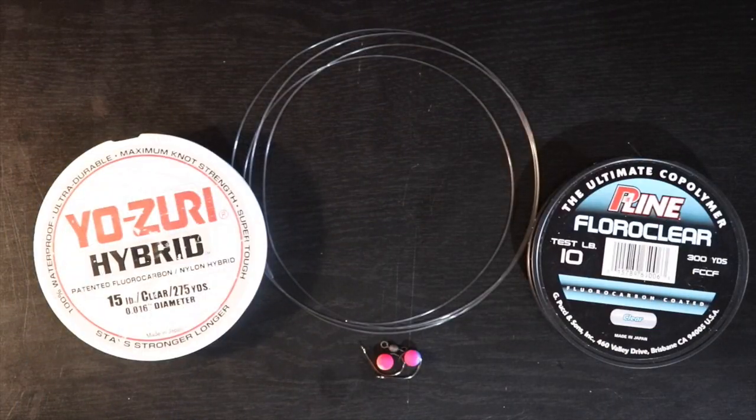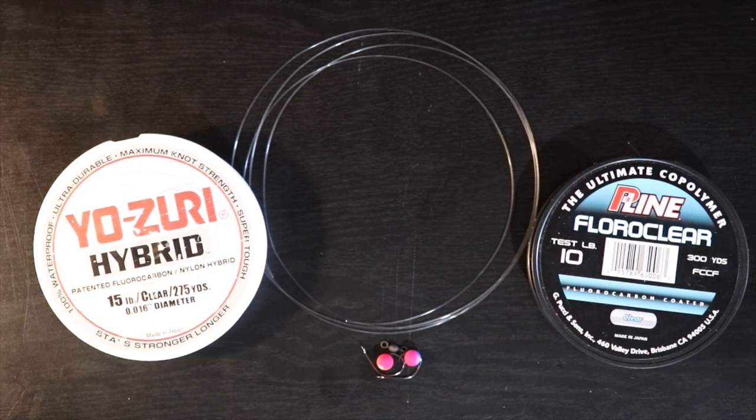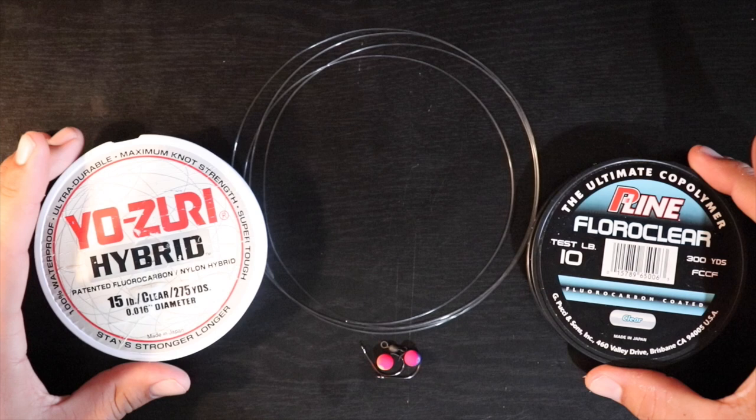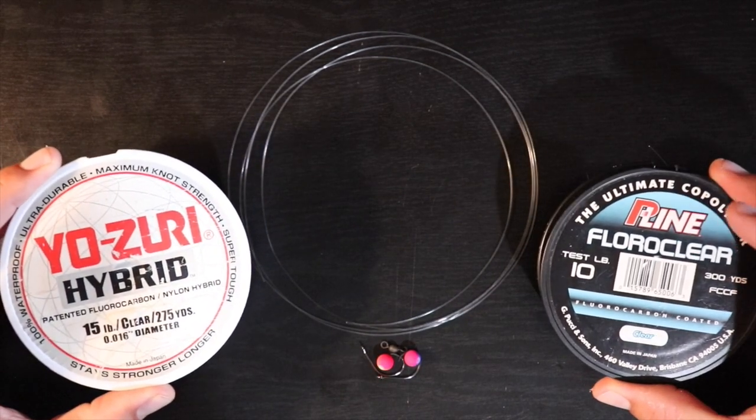All right y'all, so here are the items that we need to start off with tying this whiting rig. I like to either use a 10 pound or a 15 pound fluorocarbon. This one over here is the P-line fluorocarbon.